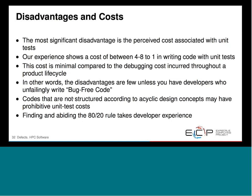We've got some questions coming in — I'll hold those until you're done. Codes that are not structured according to acyclic design concepts are very difficult to write unit tests for, simply because it's very hard to separate individual pieces and write tests that really test one thing. In a big application where everything has dependencies to everything else, it's very hard to separate and actually write meaningful unit tests.